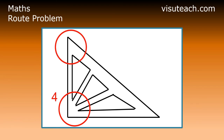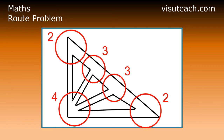Looking at the fifth housing estate, E, we get the following. This housing estate has two vertices of degree 2, two vertices of degree 3, and one vertex of degree 4. It does have less than three vertices of odd degree, therefore it is the answer.